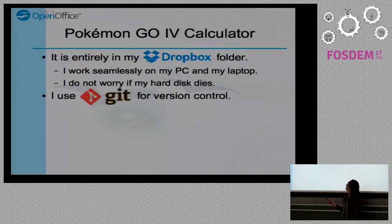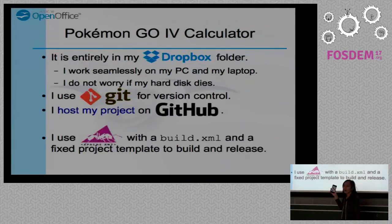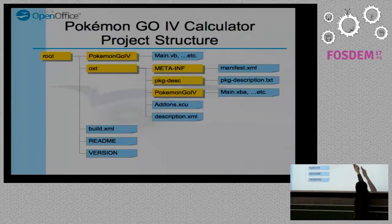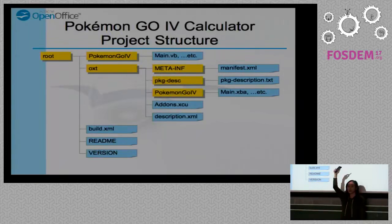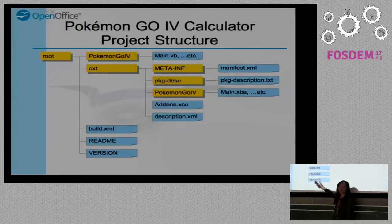I use Git for version control and host my project on GitHub. I use Apache Ant — I chose Ant because it's cross-platform — to build and release my project. This is the project structure of my Pokemon Go IV calculator: the OXT directory is the same structure as when you unzip the extension, plus the main source directory, a build.xml, a README, a version file, and it's all hosted on GitHub.